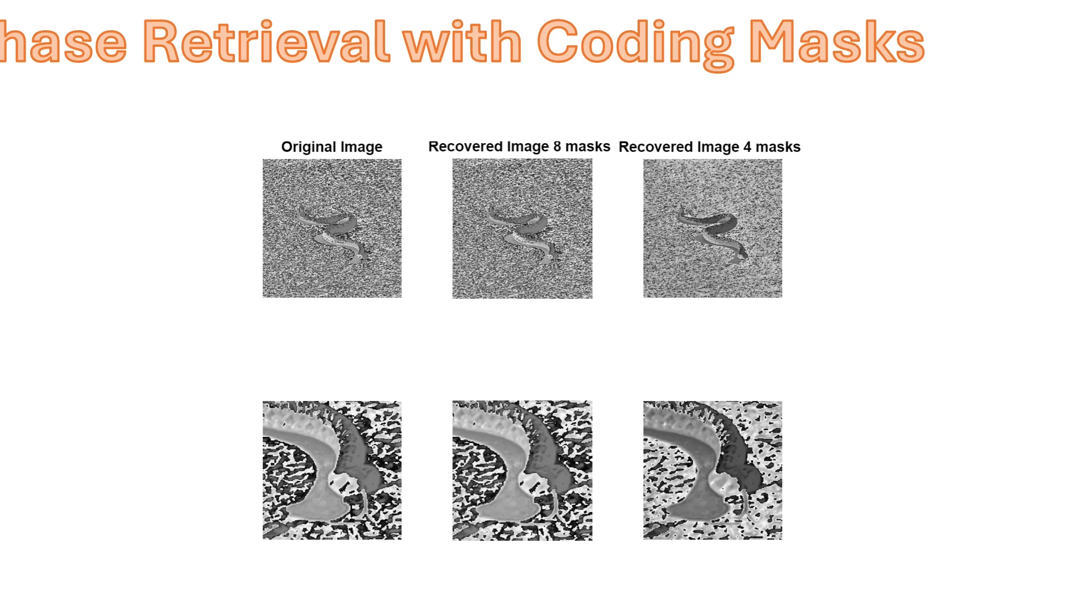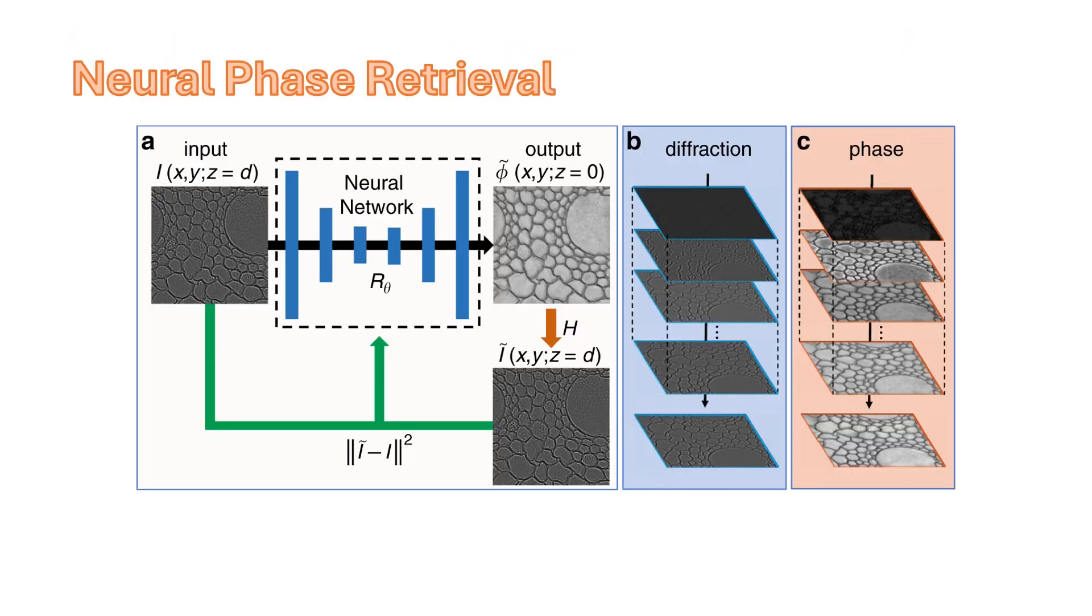More recently, people have begun to look at neural algorithms for phase retrieval. This is very similar to the Gerchberg-Saxton algorithm, but rather than using a simple support constraint, you use the constraint that the system has to be reconstructed by a neural network. So this is regression under the constraint that a neural estimator is used to form the image. It will go iteratively through this but train the network to minimize error and satisfy the constraints on reconstruction.